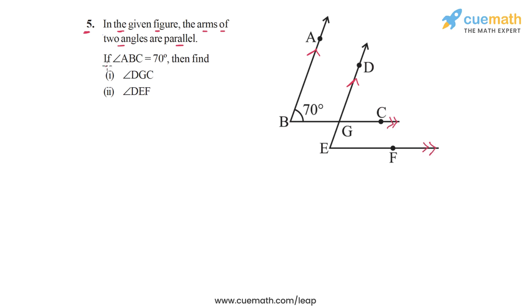And then the question says if angle ABC is equal to 70 degrees, so this angle here, this is equal to 70 degrees, find the measure of angle DGC and angle DEF.